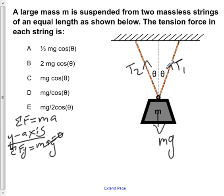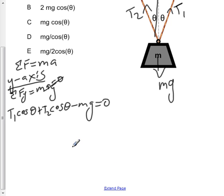If we apply SOHCAHTOA using cos of theta, we can solve for the y components of T2 and T1. We would have T1 cos θ plus T2 cos θ minus mg equals zero. Solving this out, we have T1 cos θ plus T2 cos θ equals mg.